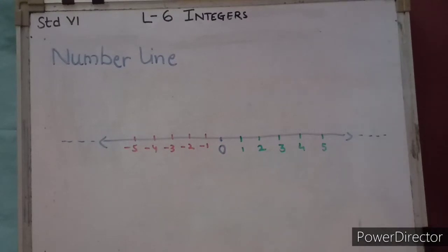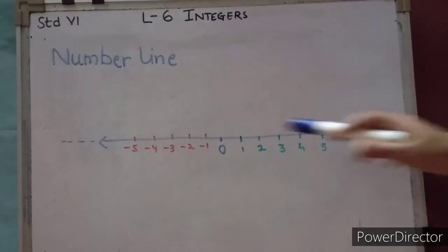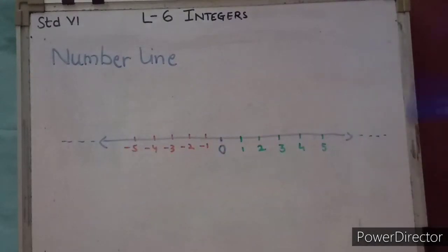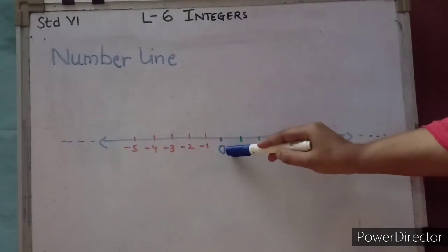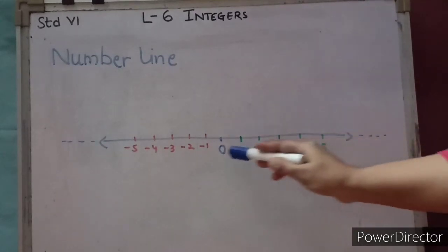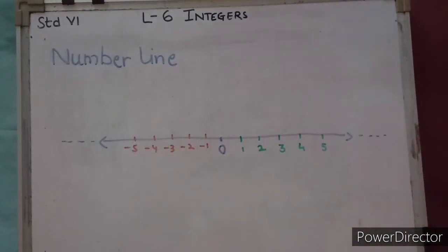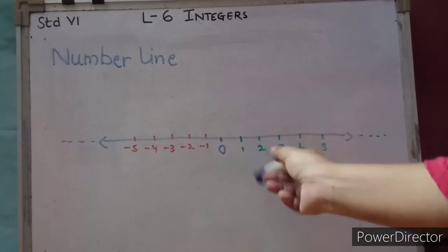Next is the number line. When we represent integers on a line, it is called a number line. I have drawn a line and kept 0 in the middle. The right side of 0 has positive numbers and the left side of 0 has negative numbers. One thing to observe: the left side number is always smaller than the right side number.